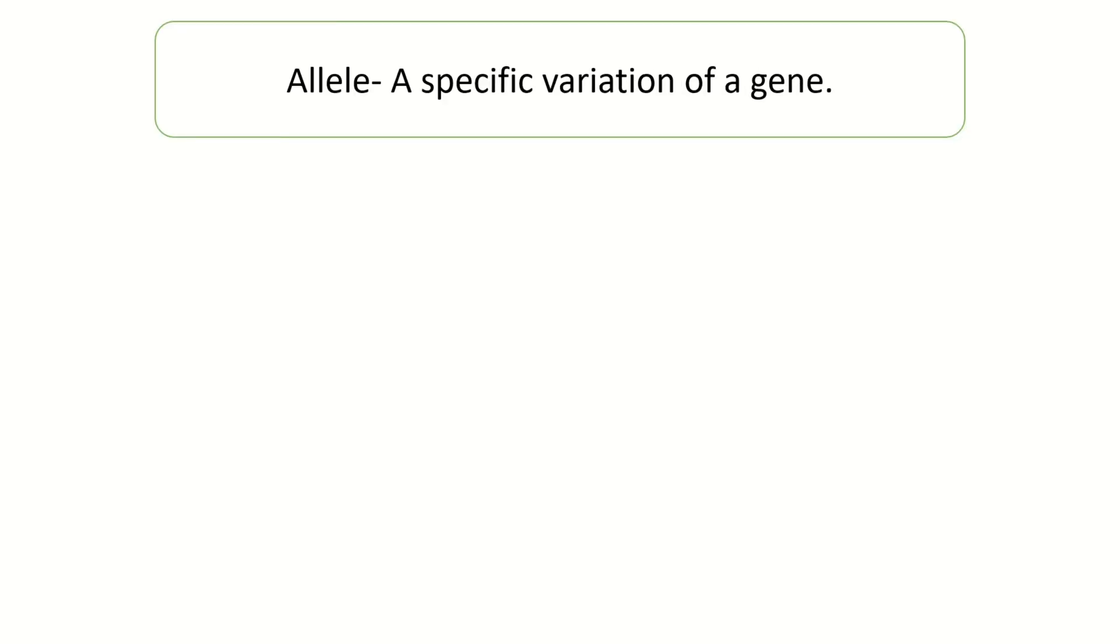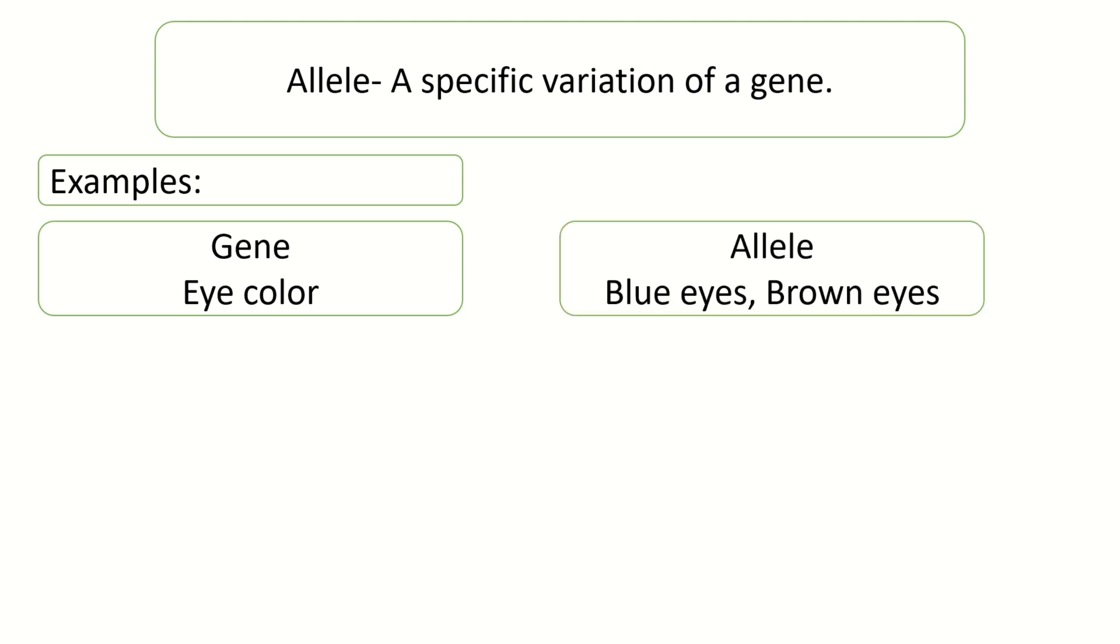Allele - a specific variation of a gene. This is the alternative form of a gene. Examples: gene eye color, allele blue eyes, brown eyes.